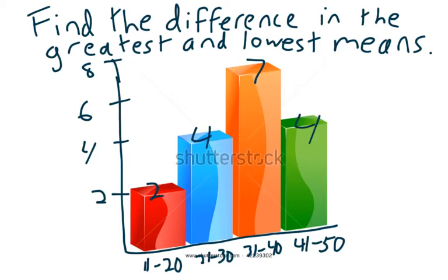And the greatest mean is going to be if we took the upper average, which would mean like 20 times 2, 30 times the 4, 40 times the 7, 50 times the 4, and then subtracted the lowest mean,